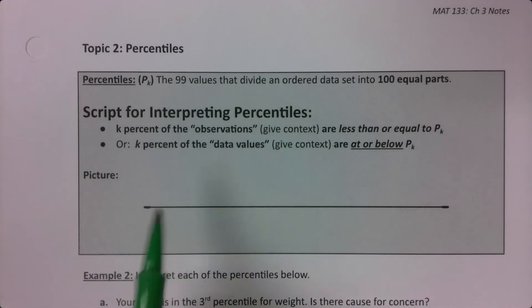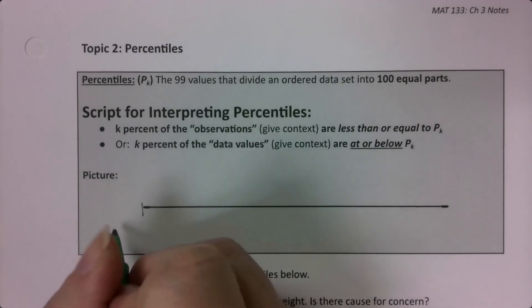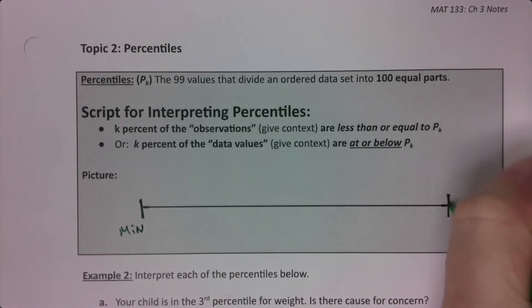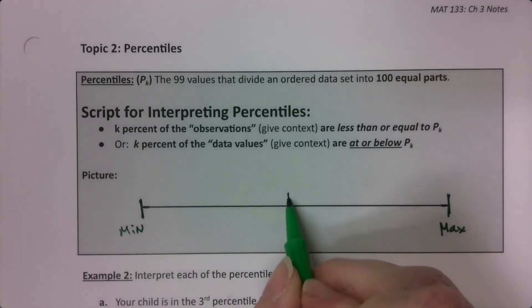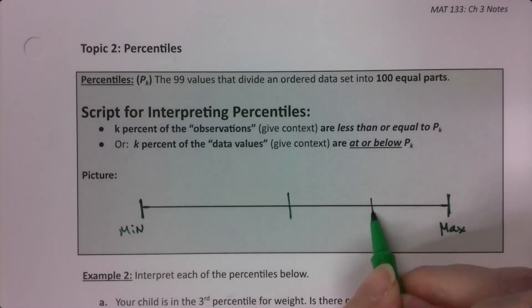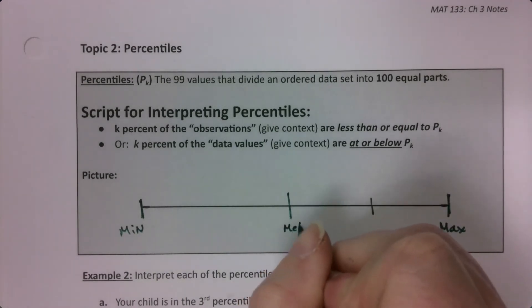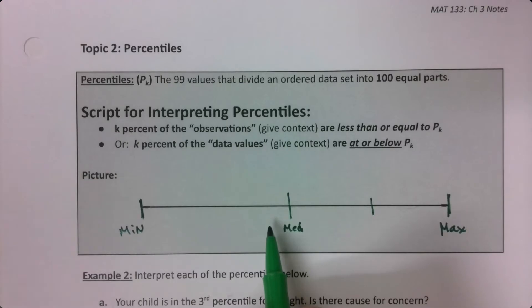Well suppose you have a data set and you have your lowest value here, which is your minimum, and your highest value here, which is your maximum. Percentiles divide the data set up into 100 equal parts.